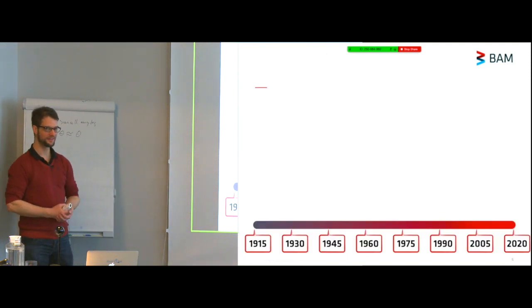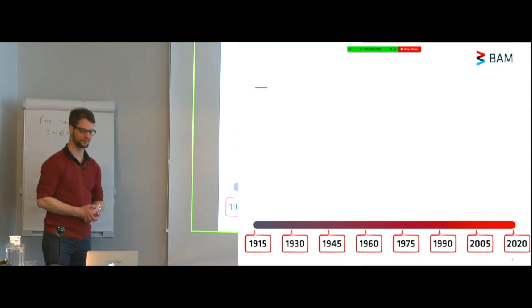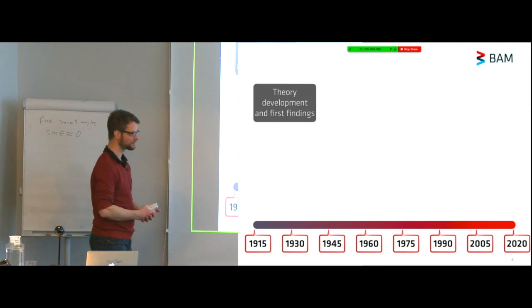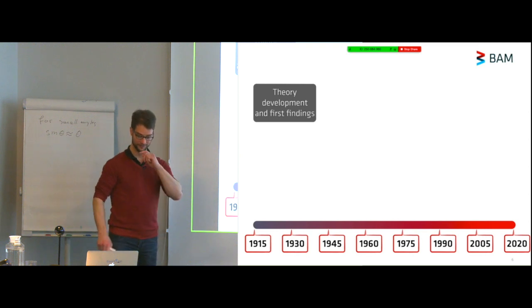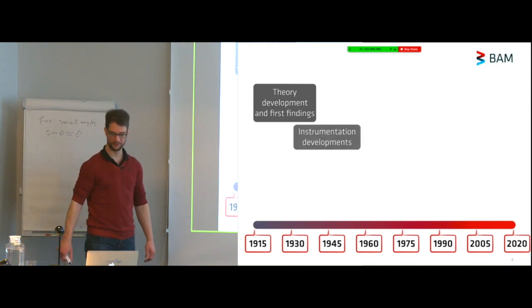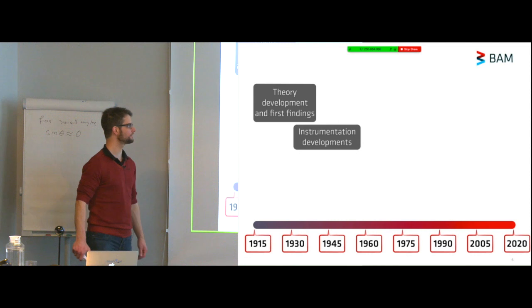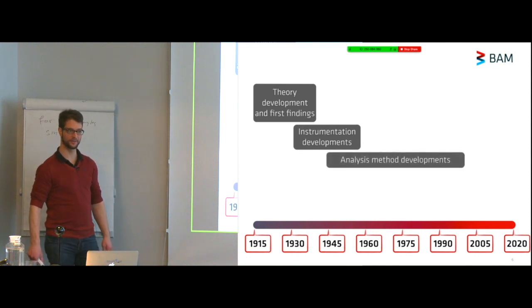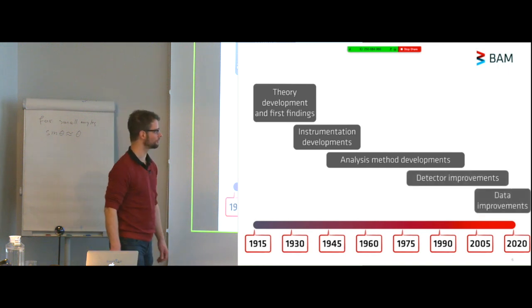During this talk, I will use a timeline. I will not go through this thing completely chronologically, because it turns out that doesn't work. But I will divide this talk into some segments, and these segments are highlighted by the first time that they came about. I will first talk about the theory development behind small angle scattering, then instrumentation developments that started after the 1930s, then developments of analysis methods, detector improvements, and data improvements towards the end.